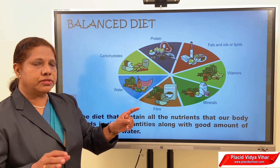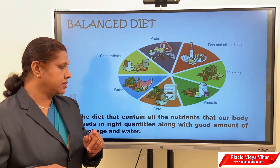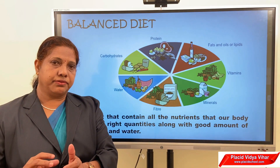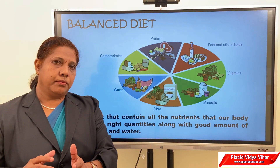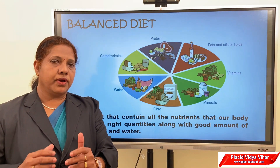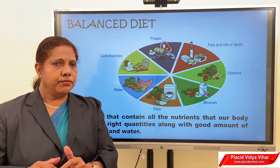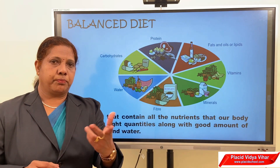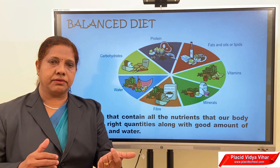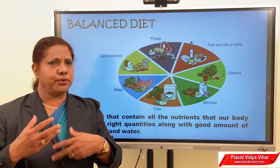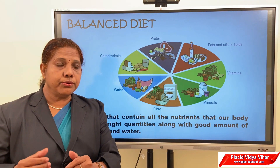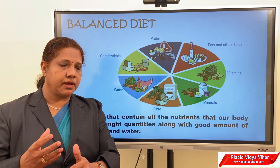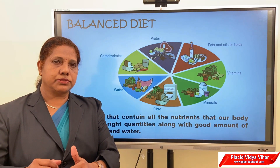Your food should contain carbohydrates, proteins, fats, vitamins, minerals, fiber, and water to form a balanced diet. Do people of all ages need the same type of food? Do people doing different types of work need the same food? For example, children do a lot of activities — playing, studying, writing, running, cycling, swimming — so they need a lot of energy-giving foods.